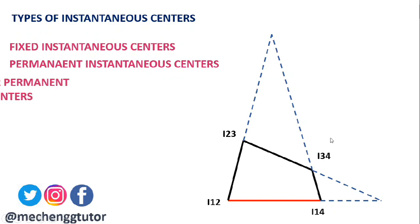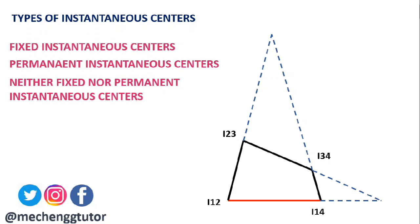The third type is the neither fixed nor permanent instantaneous center. These centers vary with the configuration of the mechanism. For the four-bar mechanism, I₁₃ and I₂₄ fall into this category — as the links rotate and change position, the locations of I₁₃ and I₂₄ also change. Hence they are neither fixed nor permanent instantaneous centers.